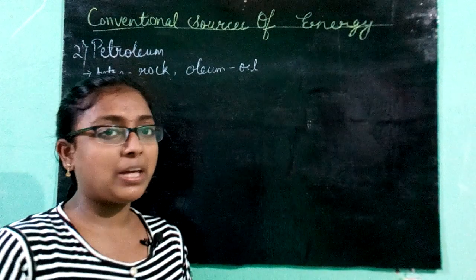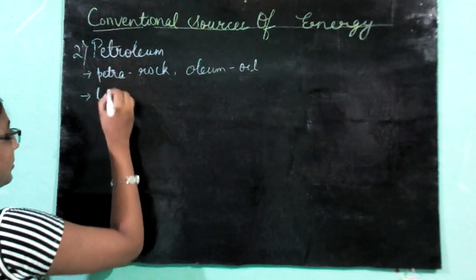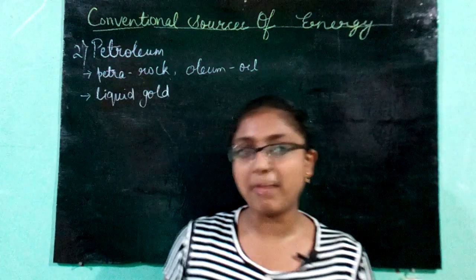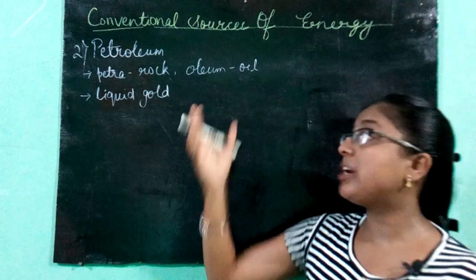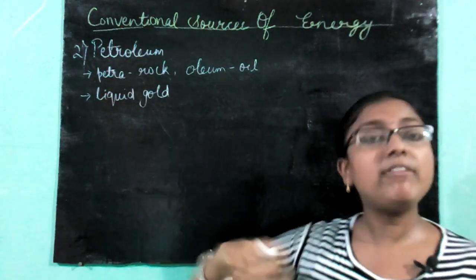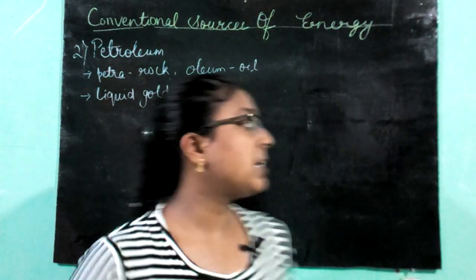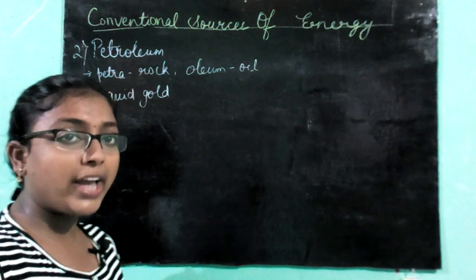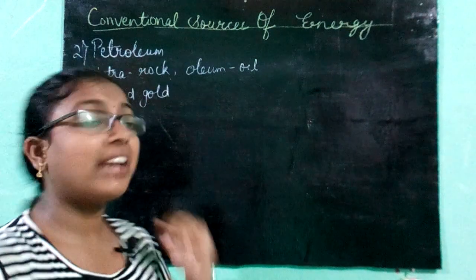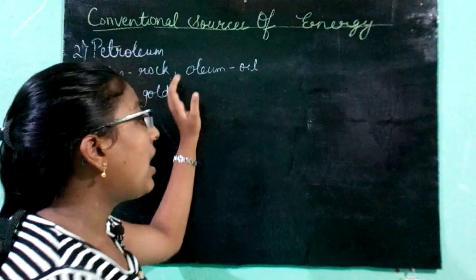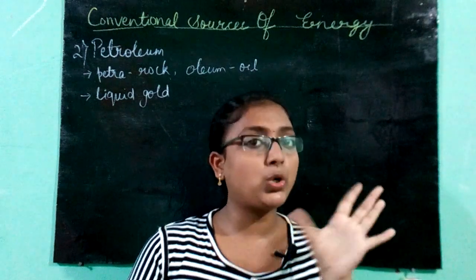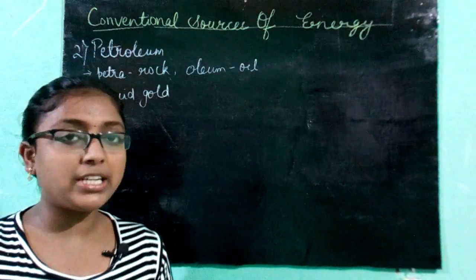We give a special adjective to petroleum — 'liquid gold.' We all know that gold is a very precious material. We call petroleum liquid gold because no part of crude petroleum is wasted; everything is utilized for some or the other purpose. Liquid petroleum is known as crude oil, used for making petrol, diesel, kerosene, etc., while petroleum in a gaseous state is known as natural gas.